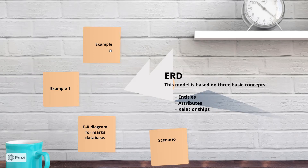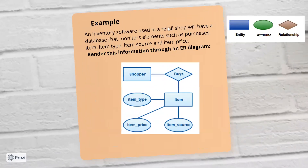Let's start with a very basic example. There is a point-of-entry software used in a retail shop. When you draw an entity-relationship diagram, you will represent the entity in a rectangle shape. So here you will see two things: one is the shopper — the person who buys — and one will be the item.